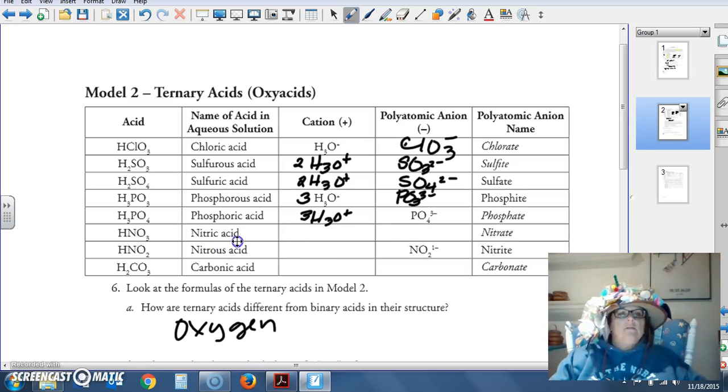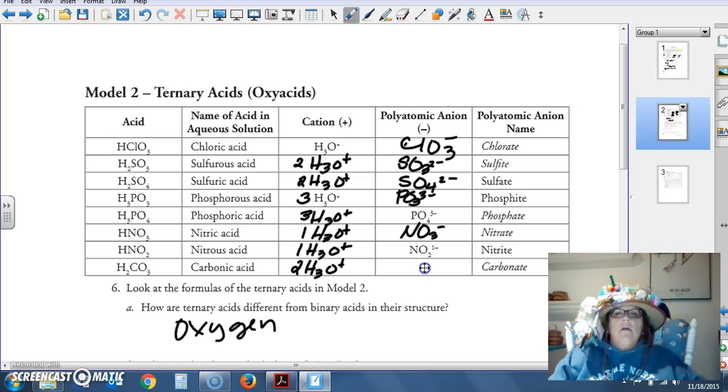Nitric acid. One hydronium ion, nitrate. Nitric acid, one hydronium ion, nitrate. Nitrous acid, one hydronium ion, nitrite.